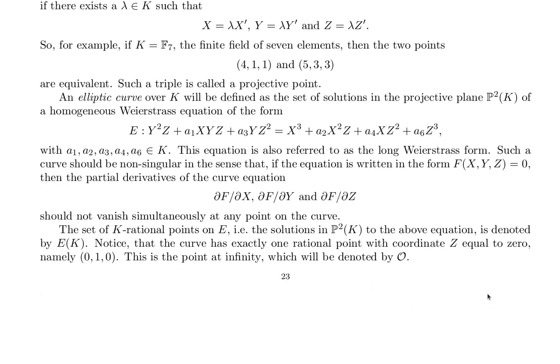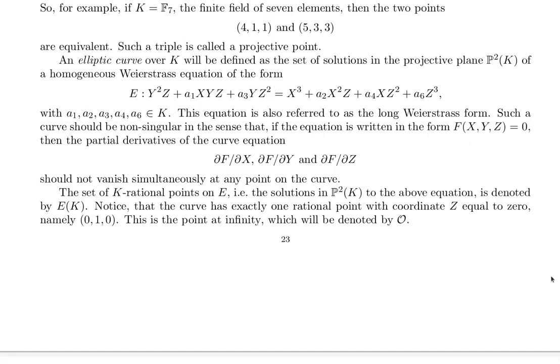The set of K-rational points on E, i.e. the solutions in P^2(K) to the above equation is denoted by E(K). Notice that the curve has exactly one rational point with coordinate Z equal to 0, namely (0, 1, 0). This is the point at infinity which will be denoted by O.